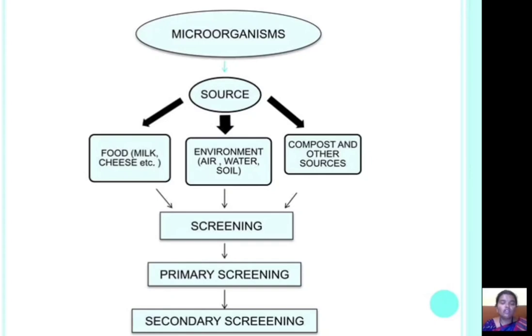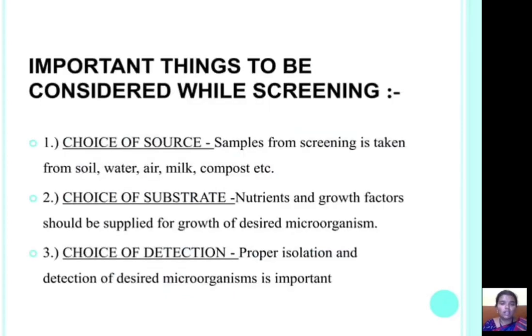After identifying the source of microorganisms, we should screen the microorganisms. Screening is of two types: one is primary screening and the other is secondary screening.